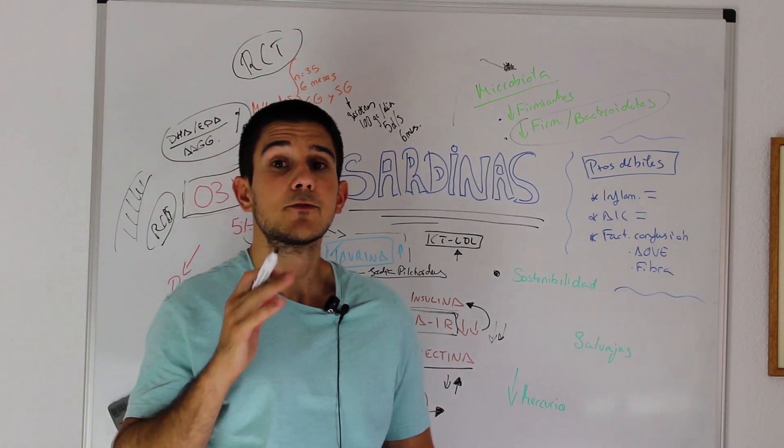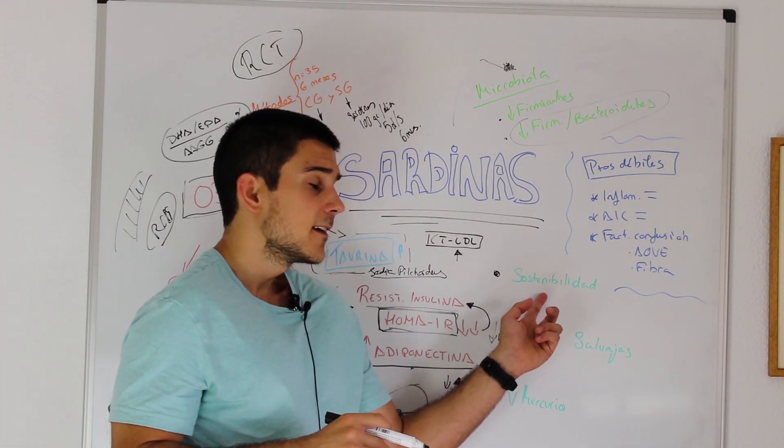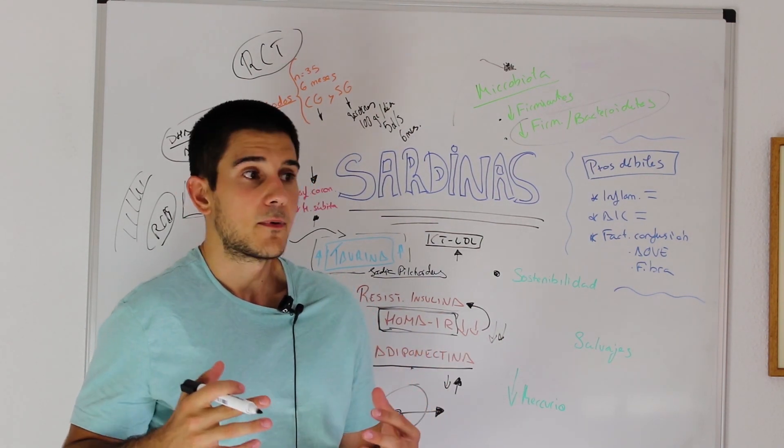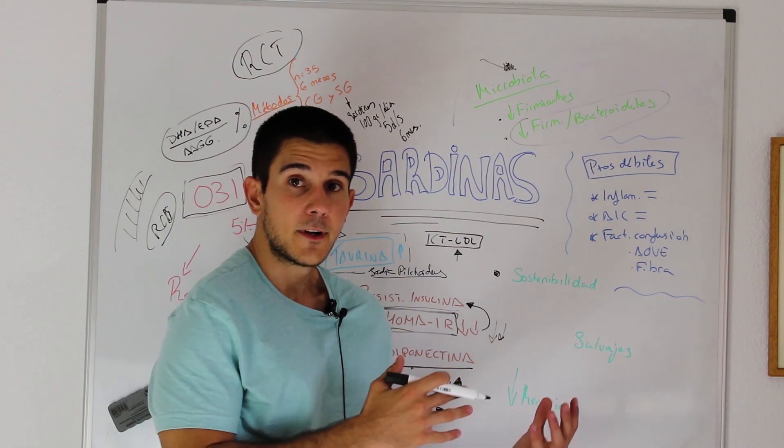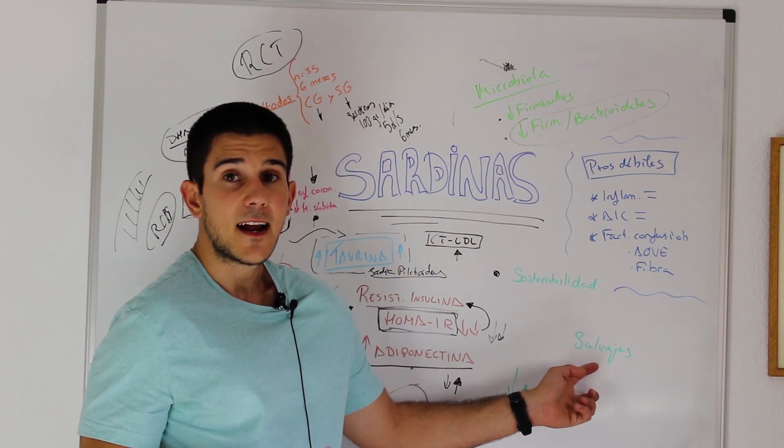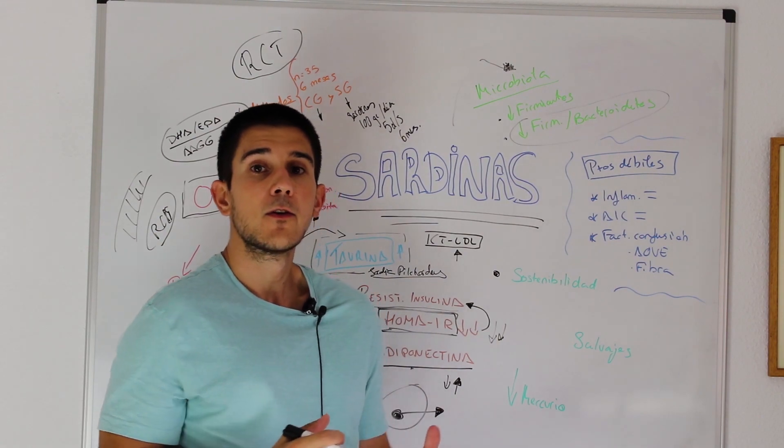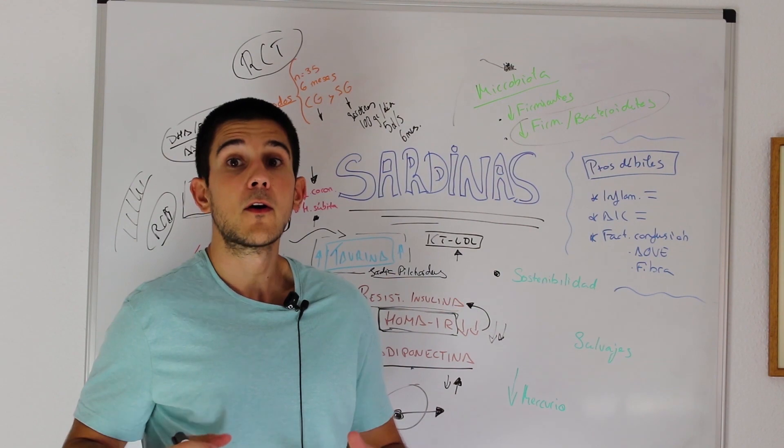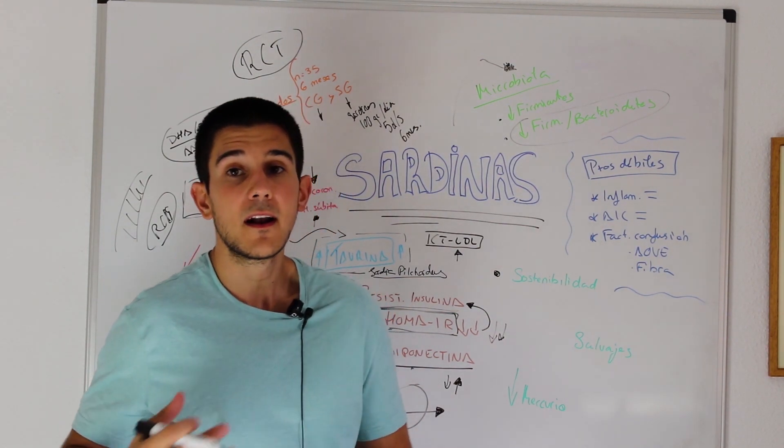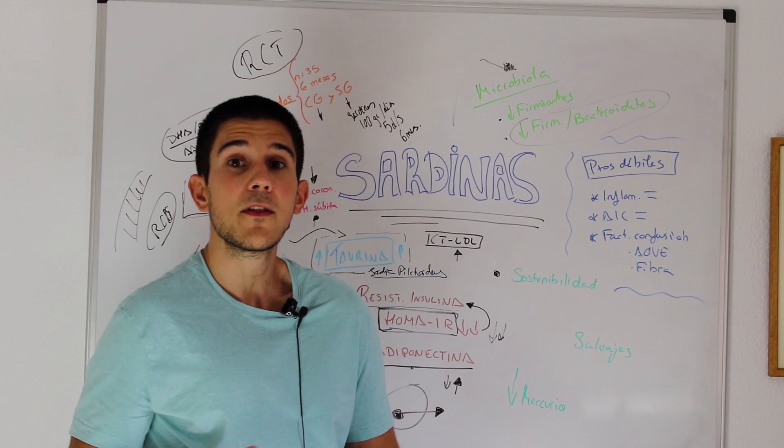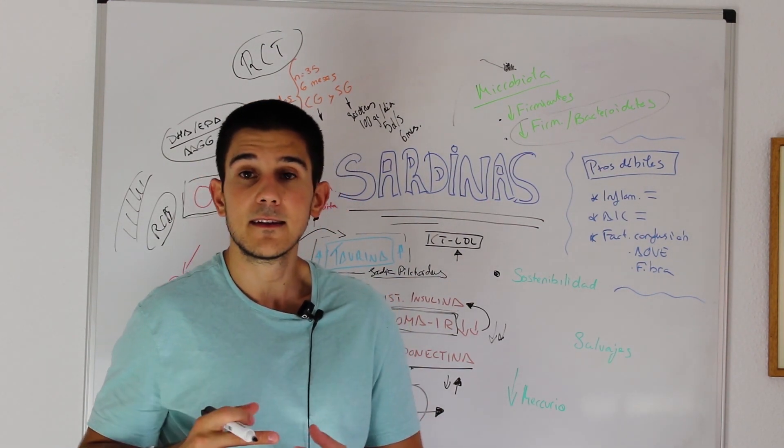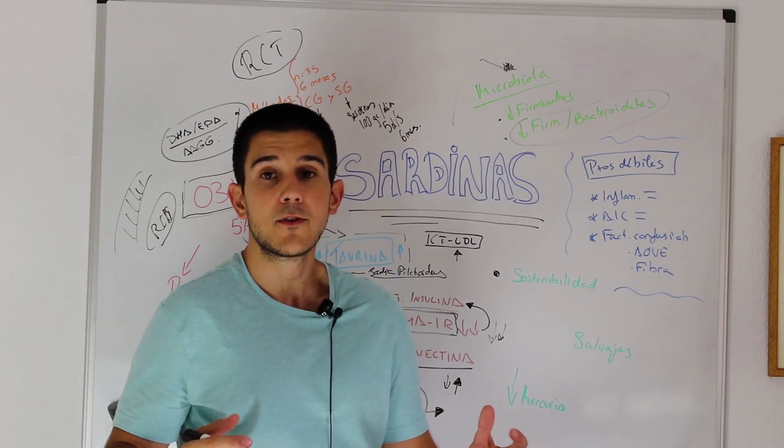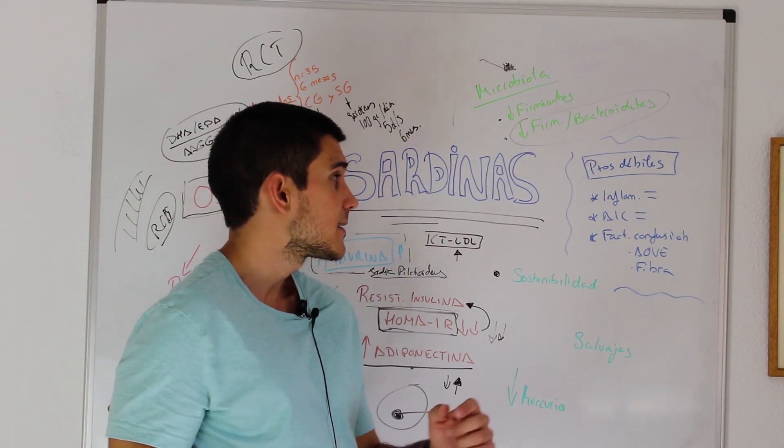Three more points to cover. The first one, sustainability. Sardines are usually more sustainable than other fishes, for example than tuna. Sardines are usually wild caught, so that improves its nutrient content and makes this fish more healthy. And sardines don't eat other fish, they eat plankton, so its mercury levels are usually very low.